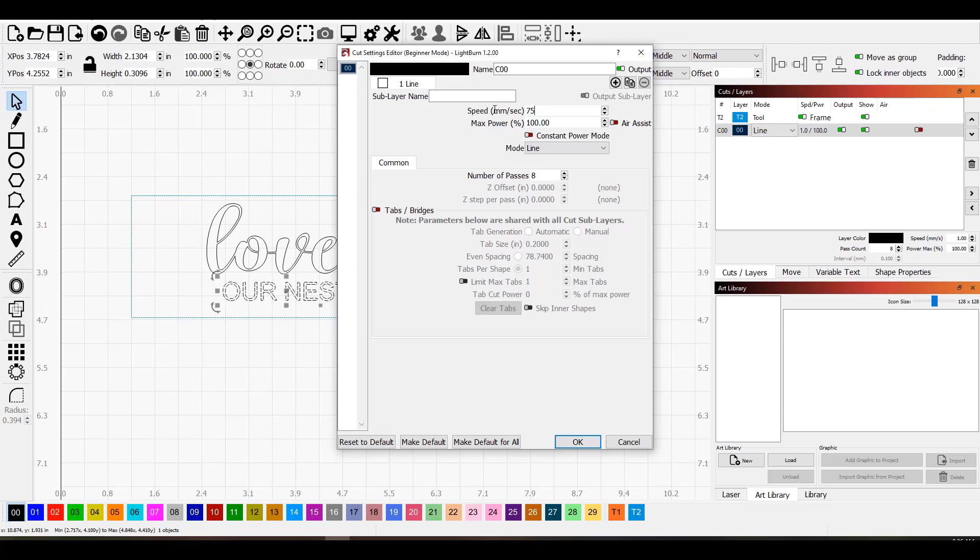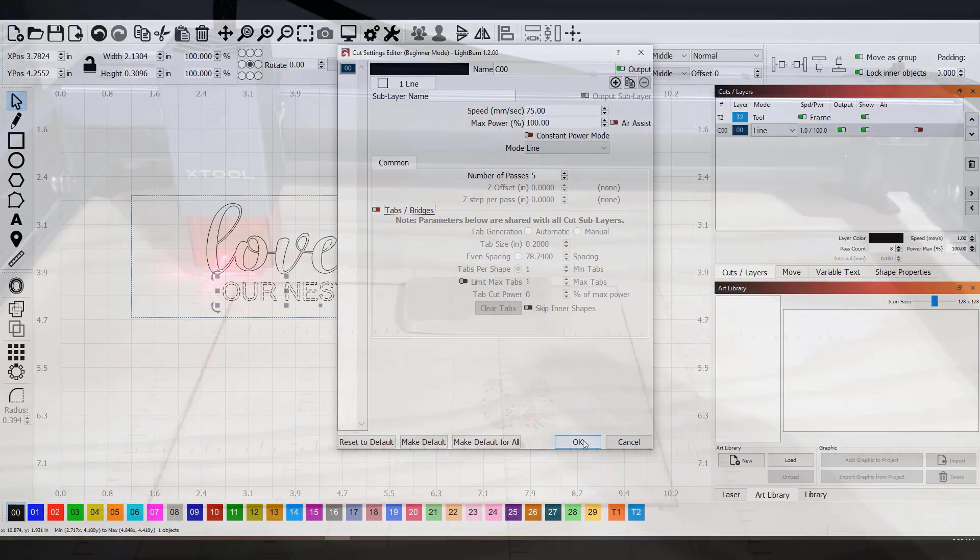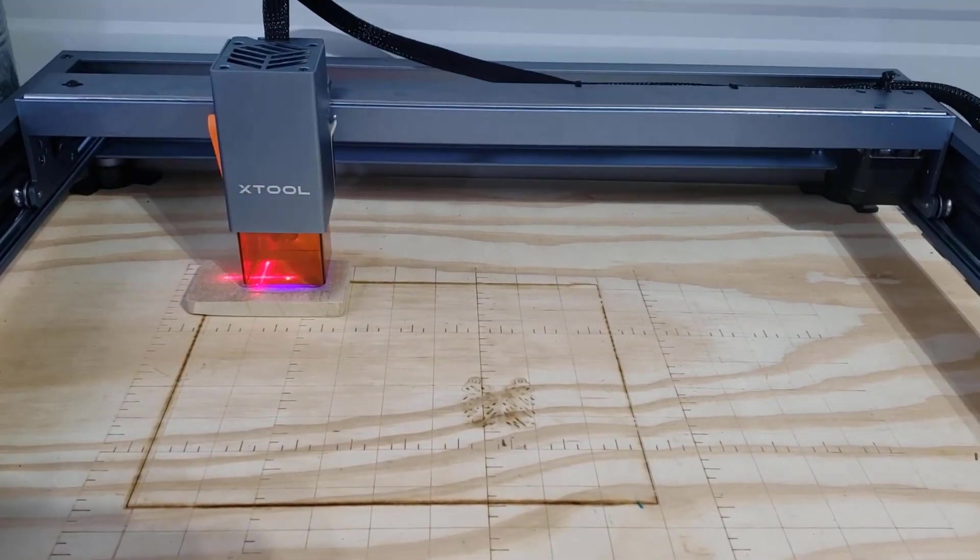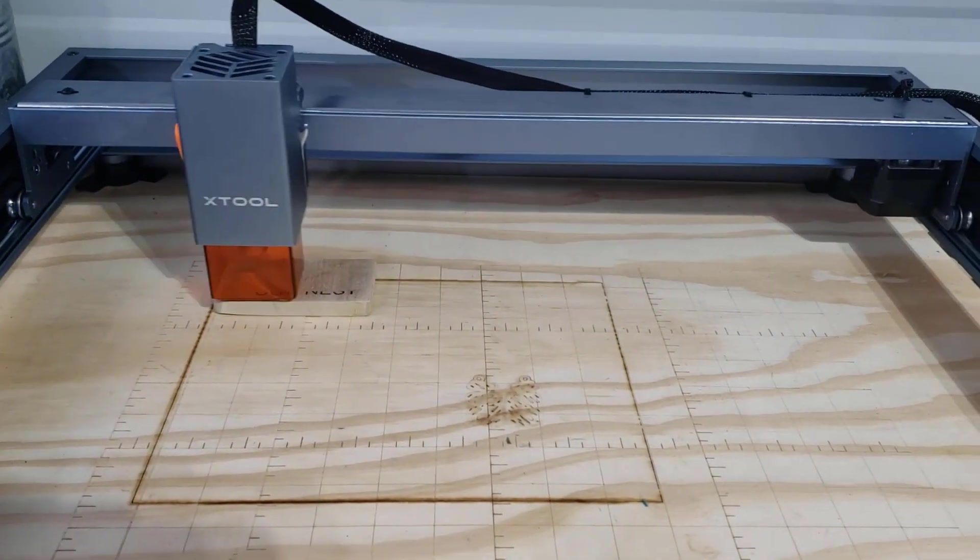I set my speed, power and the number of passes for the engraving. I sent the cut to the laser and got the wood in position.